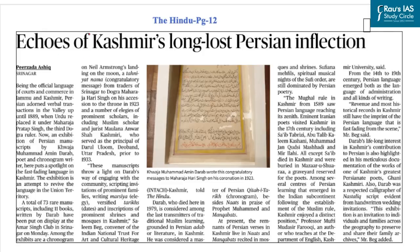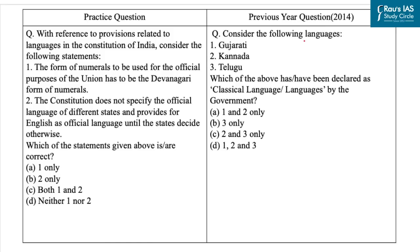The inspiration for our next question is from this article on the importance of the Persian language, which used to be the official language of courts and commerce in Jammu and Kashmir until 1889, when Urdu replaced it under Maharaja Pratap Singh, the third Dogra ruler. Part 17 of the Constitution is important for UPSC prelims, as seen from the question based on classical language that came in 2014.